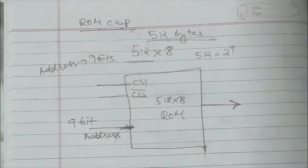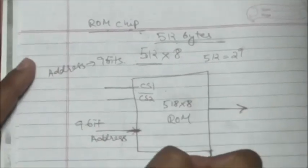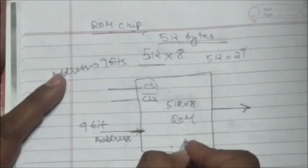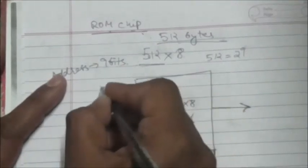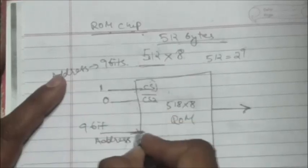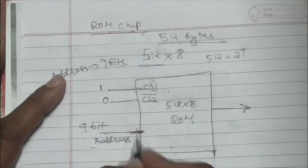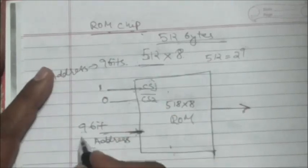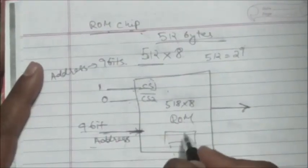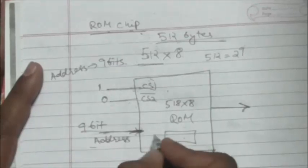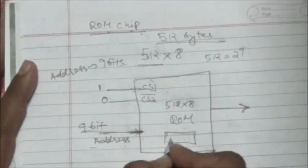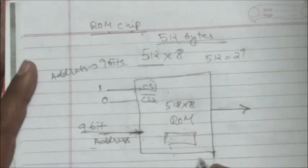To perform the read operation on this ROM chip, first the chip must be selected by enabling it through the chip select inputs: CS1 should be 1 and CS2-bar should be 0. Then a 9-bit address is provided at the address input. When the chip is enabled and the 9-bit address is given, whatever content is stored in the ROM at that address will be read.